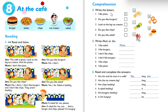Exercise number two: write the letters. Look at the pictures and match them to the sentences. Picture A — chips, B — pizza, C — salad, D — burger, E — ice cream.